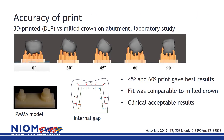Now let's look at the accuracy of printed restorations. In this study, the influence of 3D printing parameters on fit and internal gap was evaluated. A dental model was fabricated for a 3-unit prosthesis with 2 implants, and milled crowns were used as a control. The prostheses were seated and scanned with a micro CT, and the internal volume and marginal fit were evaluated. The data showed that 45 and 60 degree print angles gave the best results, with fit comparable to milled crowns, and results were considered clinically acceptable.